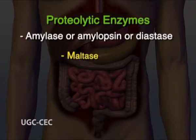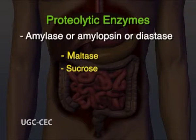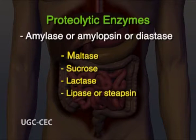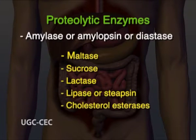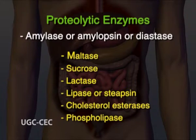Amylolytic enzymes such as amylase (also called amylopsin or diastase), including maltase, sucrase and lactase, are also present. Lipase, osteoepsin, cholesterol esterases and phospholipases are also found. Albumin, globulin and various inorganic constituents are also found in the digestive juice.